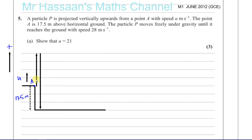This has gone up, reached zero velocity, come down, and by the time it hits the ground — which is 17.5 meters below the point from which it was thrown — its speed has reached 28 meters per second. And at that point it's traveling in the direction going down.